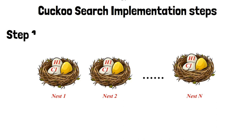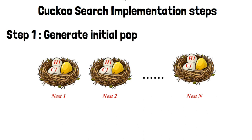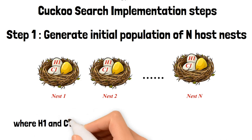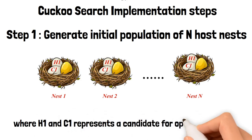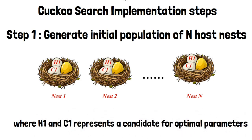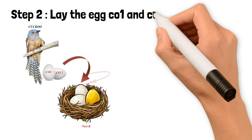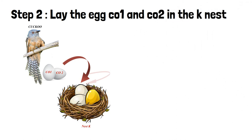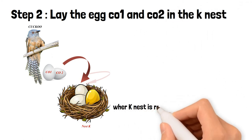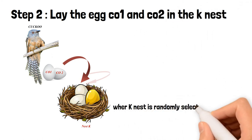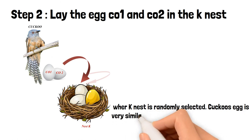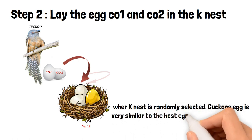Cuckoo search implementation steps. In step 1, generate an initial population of n host nests, where H1 and CI represent candidates for optimal parameters. In step 2, lay the egg CO1 and CO2 in the k-nest. The k-nest is randomly selected, and the cuckoo's egg is very similar to the host egg.